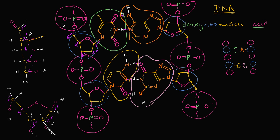One way to think about it: we go phosphate group — connected by what we call phosphodiester linkages — that's what allows these backbones to link up. We're going from phosphate to five prime carbon, then through the sugar to the three prime carbon, then to another phosphate, then to the five prime carbon, then to the three prime carbon. So we're going from five prime to three prime on the left-hand chain. That direction — five prime to three prime.